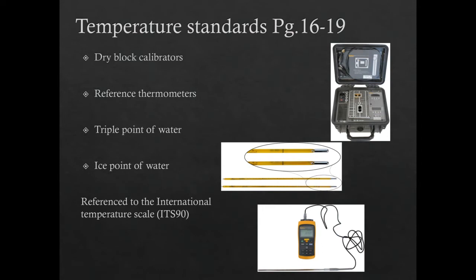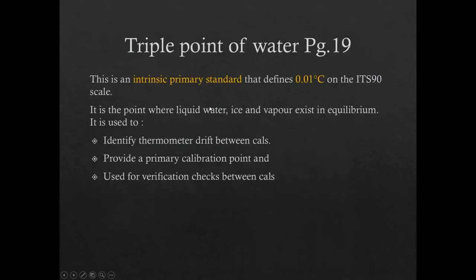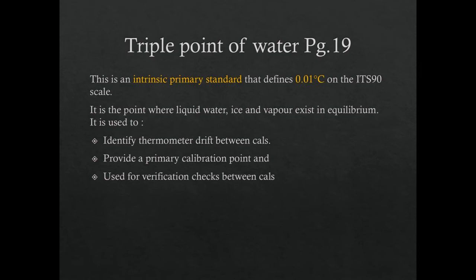Some temperature standards are intrinsic standards: the triple point of water and the ice point of water are examples. Their values are tied to physical or scientific properties — we know ice melts at zero degrees, so a well-stirred container of ice water is right around zero. These temperature devices are referenced to the International Temperature Scale (ITS-90). The triple point of water is an intrinsic primary standard, and it defines 0.01 degrees Celsius on its scale.